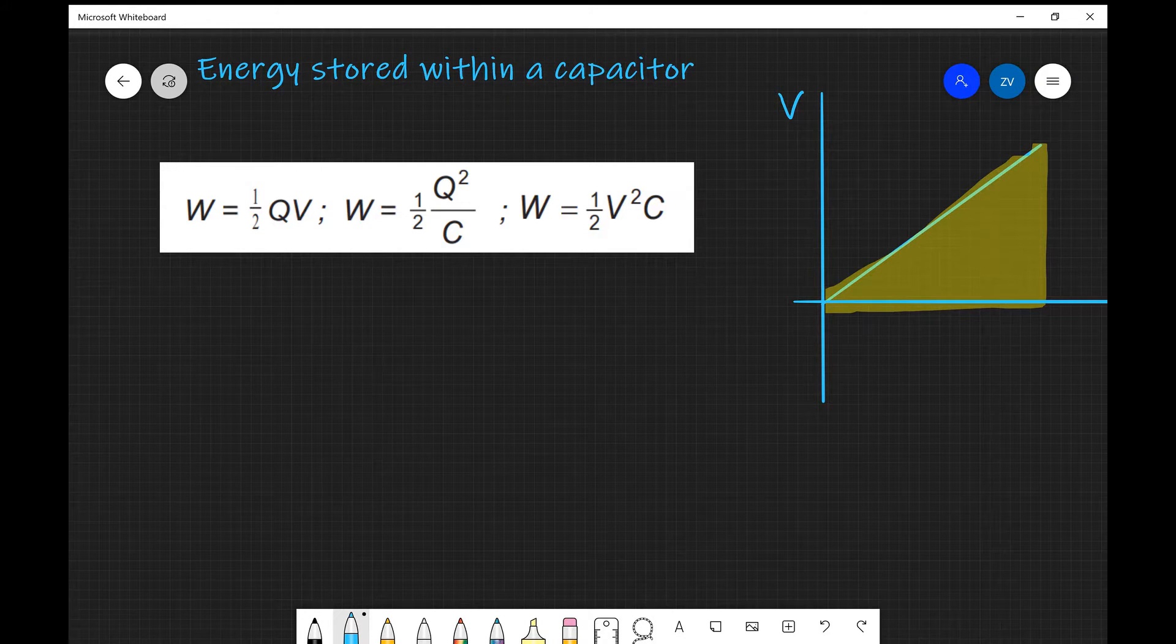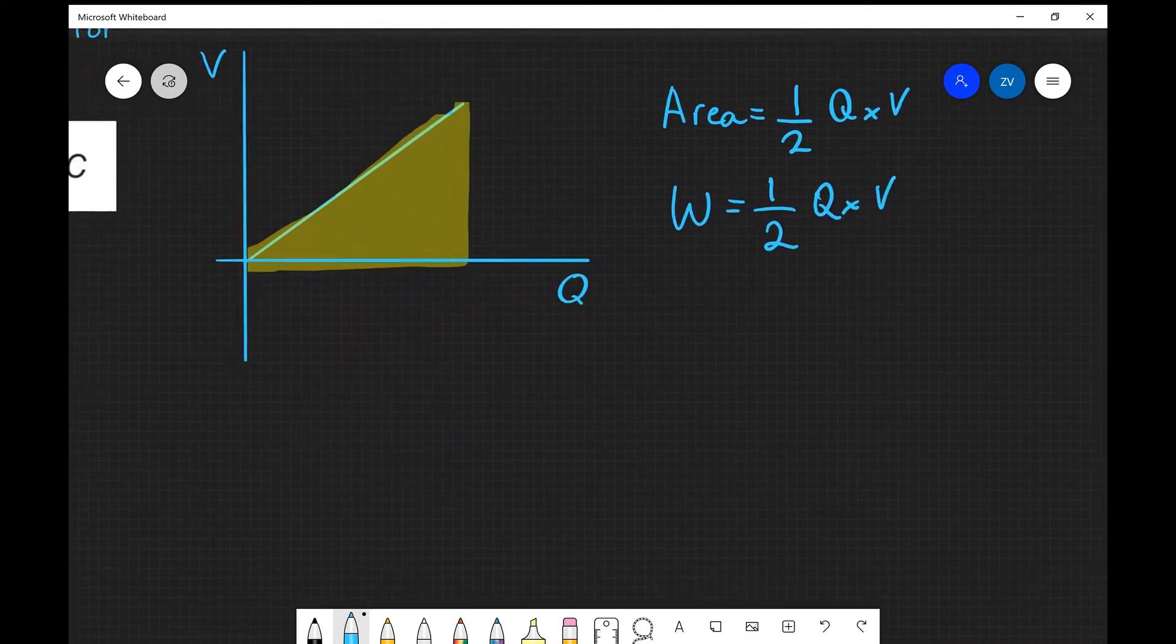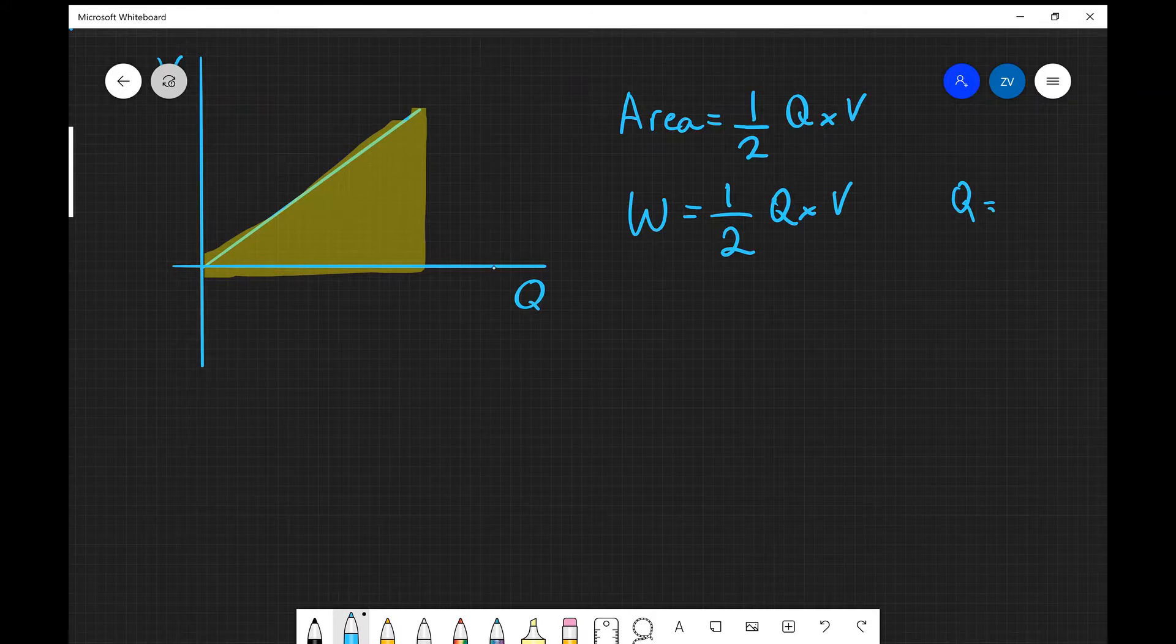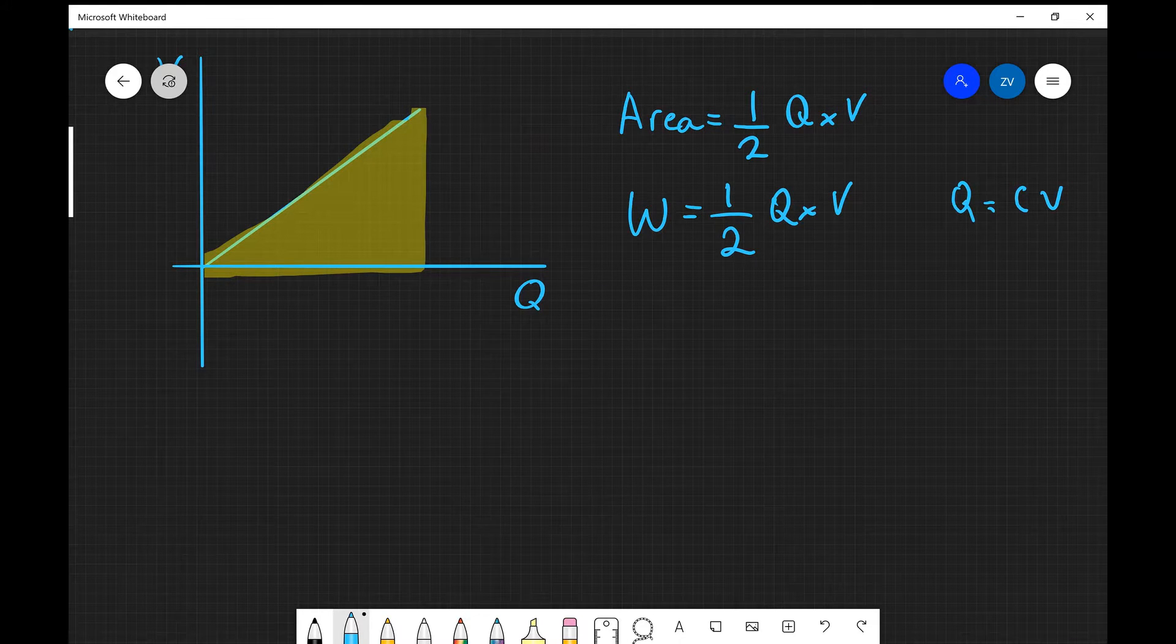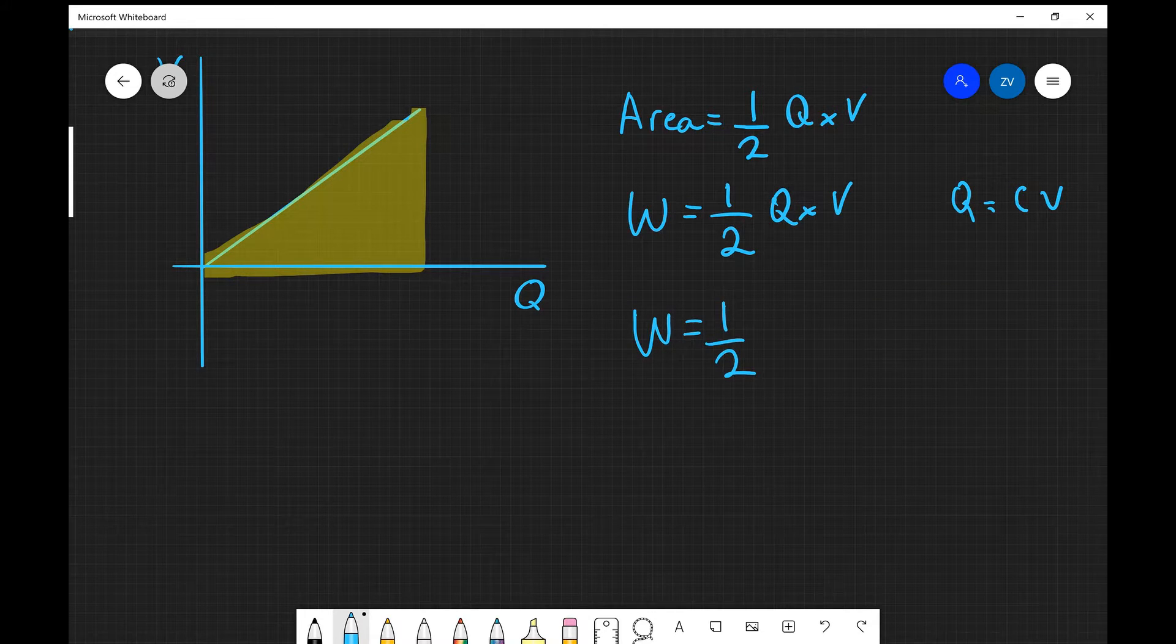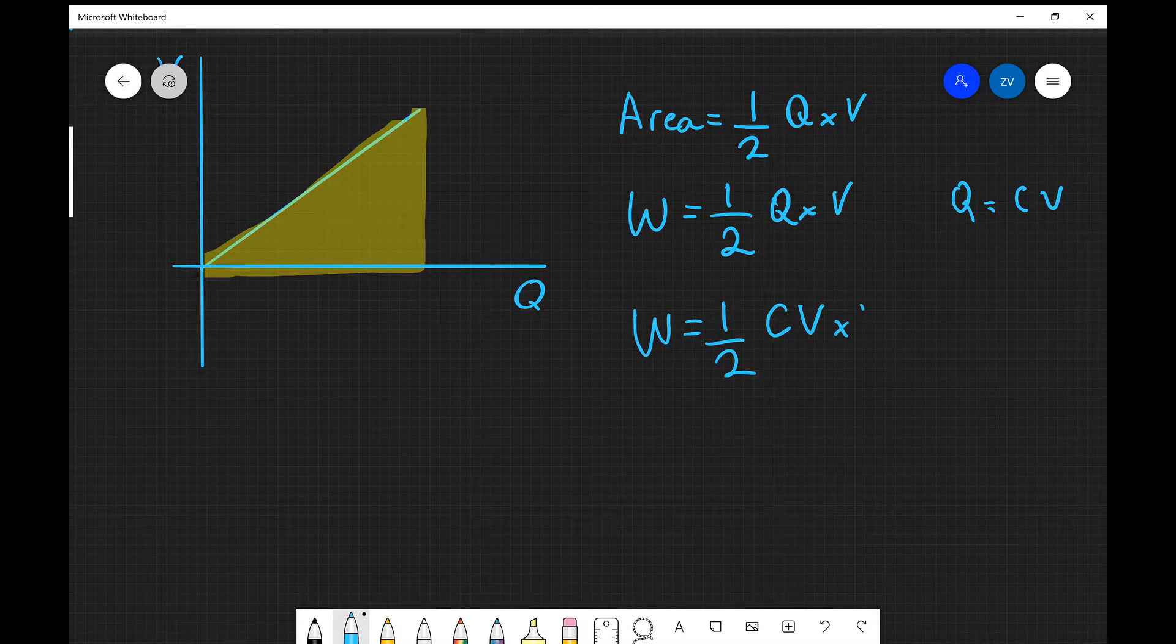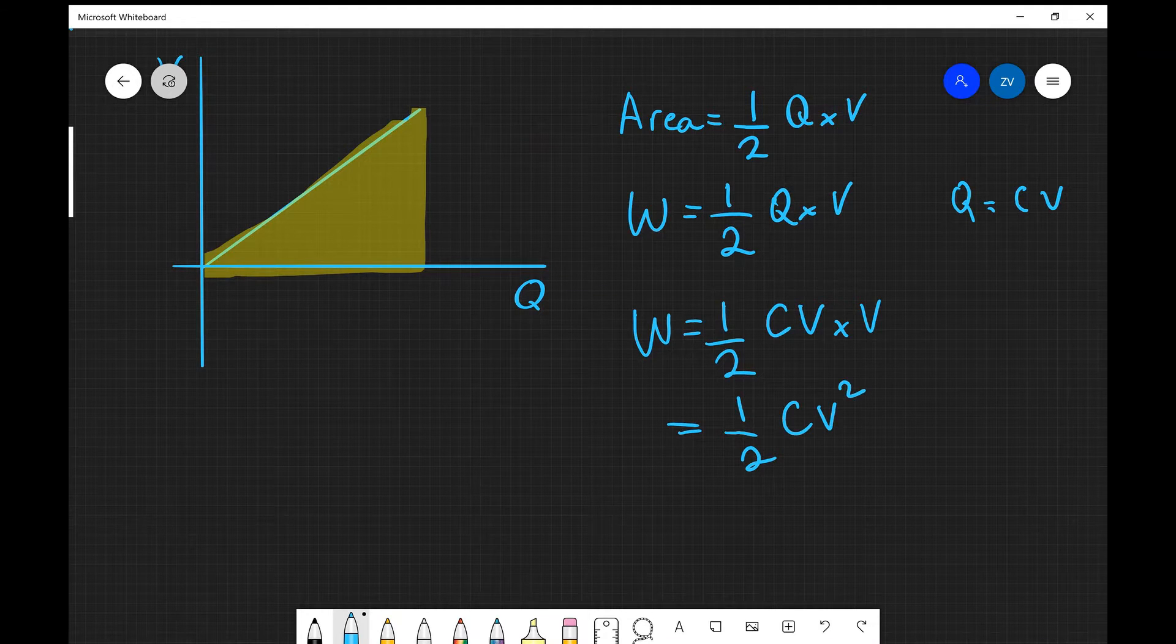Now because Q is equal to CV, we can actually expand this even further. So because Q is equal to CV, rather than Q, what I'm going to write is just CV, and what I'm going to get is that the energy is also equal to a half CV times V, which is equal to a half CV squared.